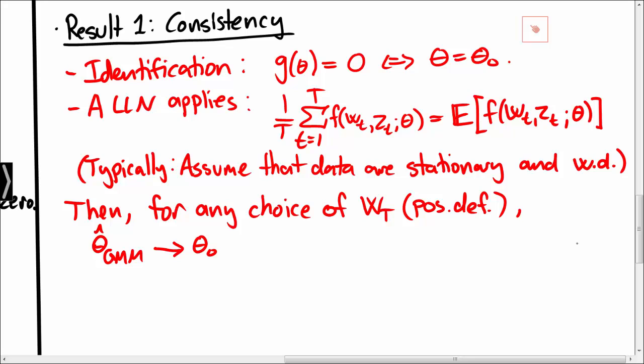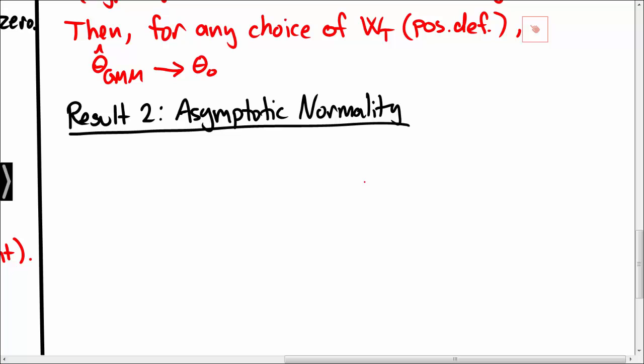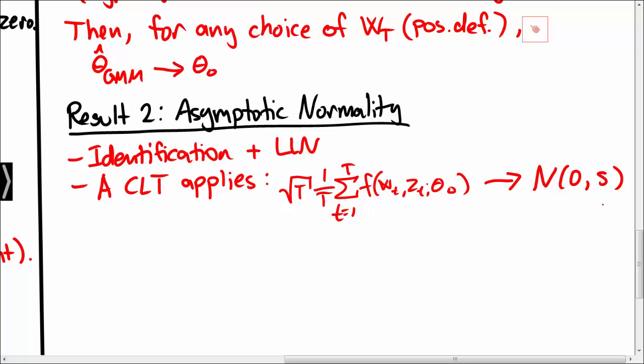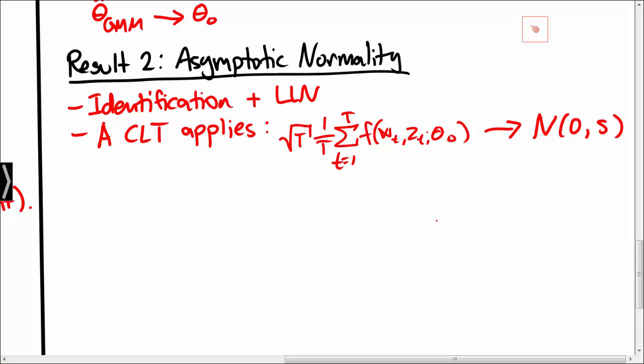Next we turn to the distribution of the GMM estimator and state sufficient conditions for asymptotic normality. We assume the same conditions as for consistency — identification and the law of large numbers. In addition, we assume that a central limit theorem applies: specifically, when we multiply the average of f by the square root of T, this quantity has an asymptotic normal distribution. The matrix S is the asymptotic variance of f. The central limit theorem applies if the data is stationary and weakly dependent, which is what we typically assume.